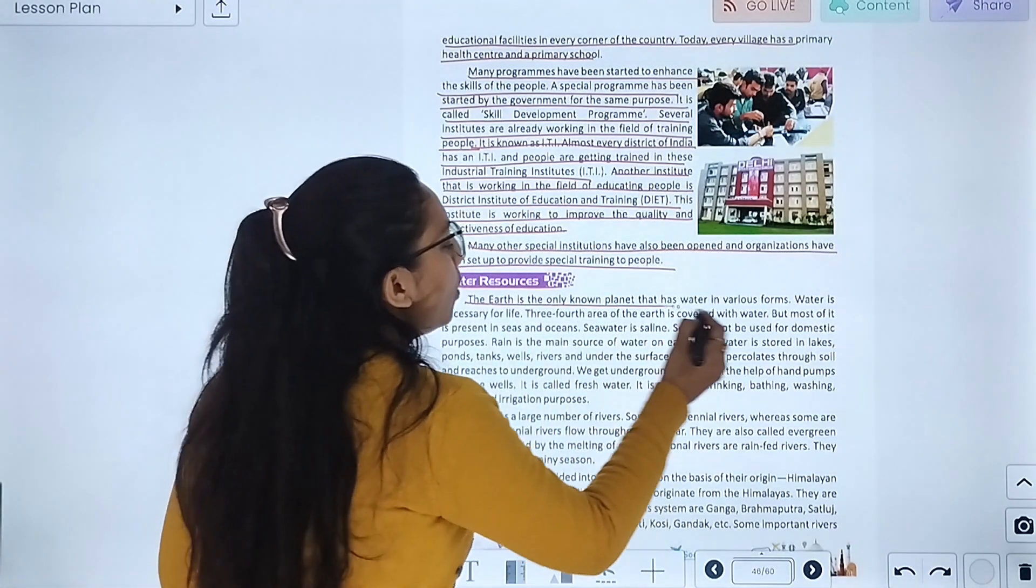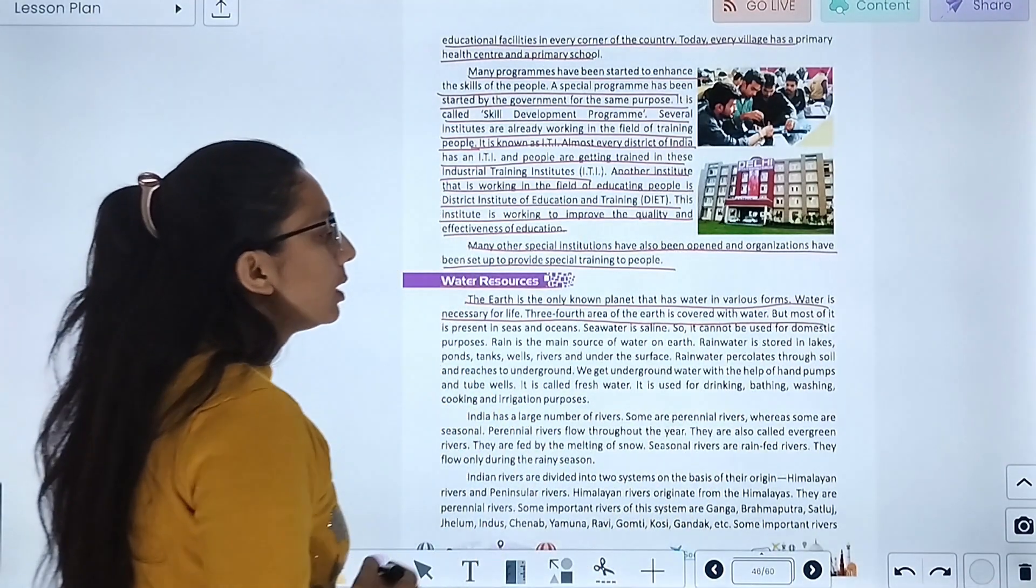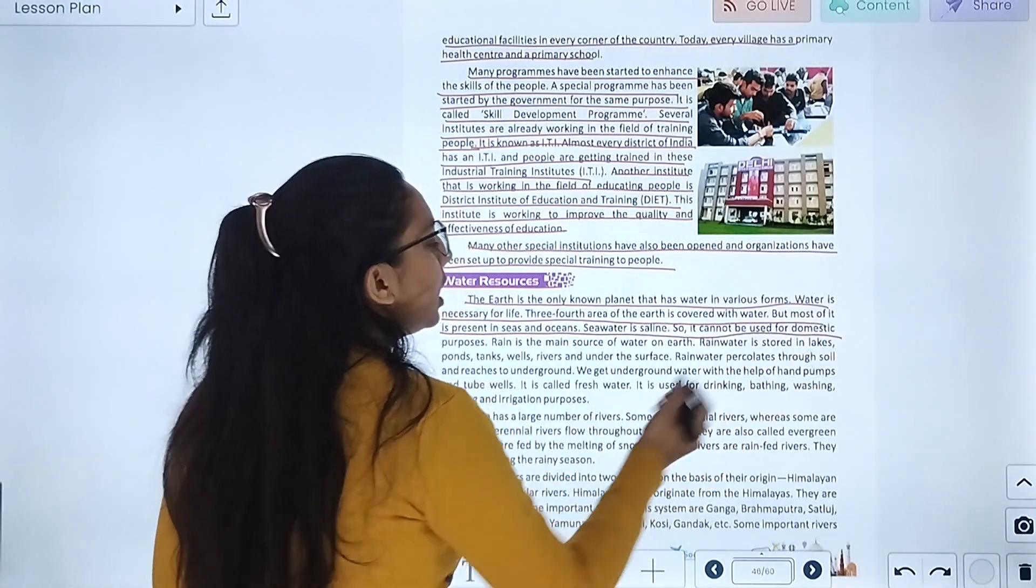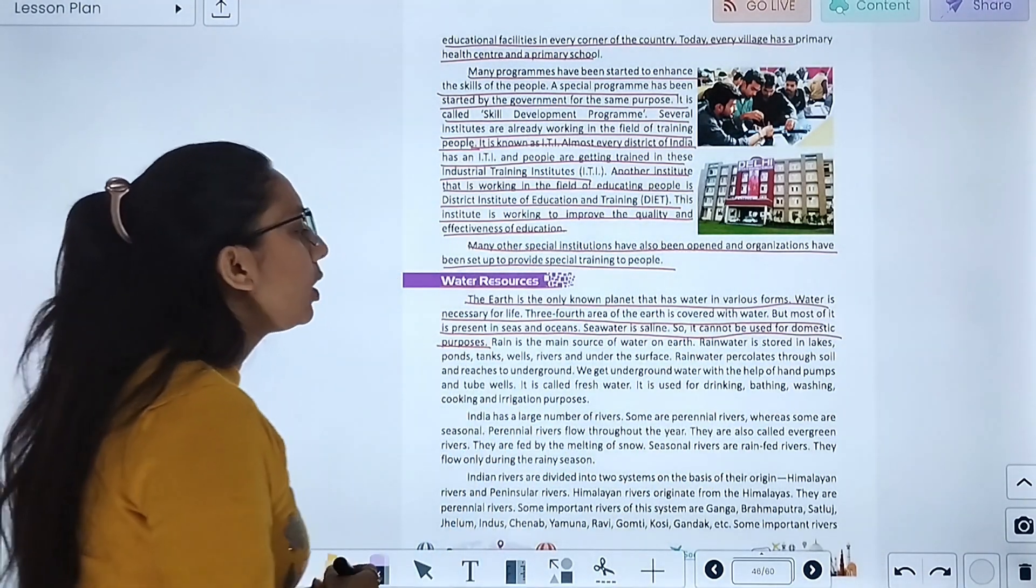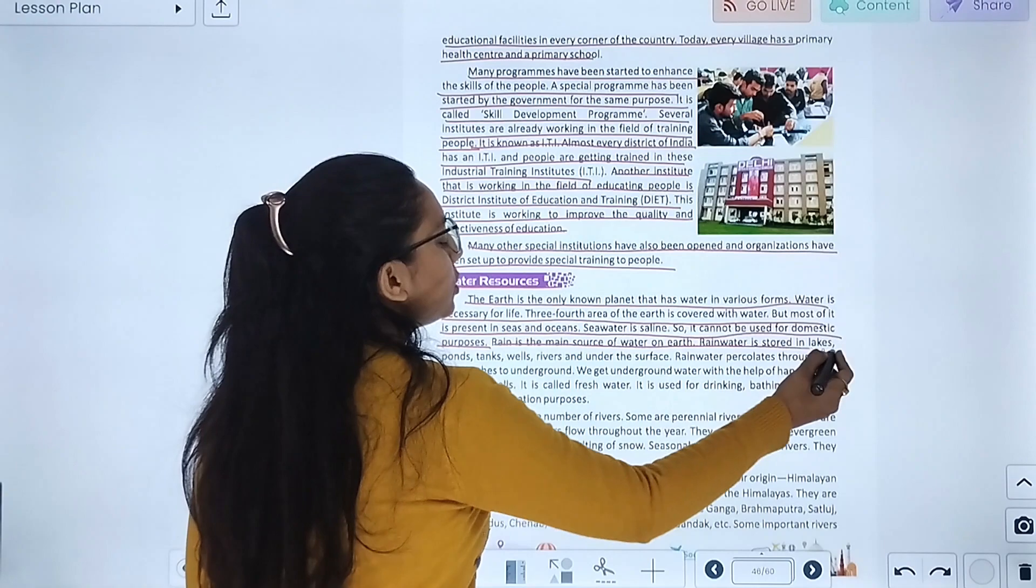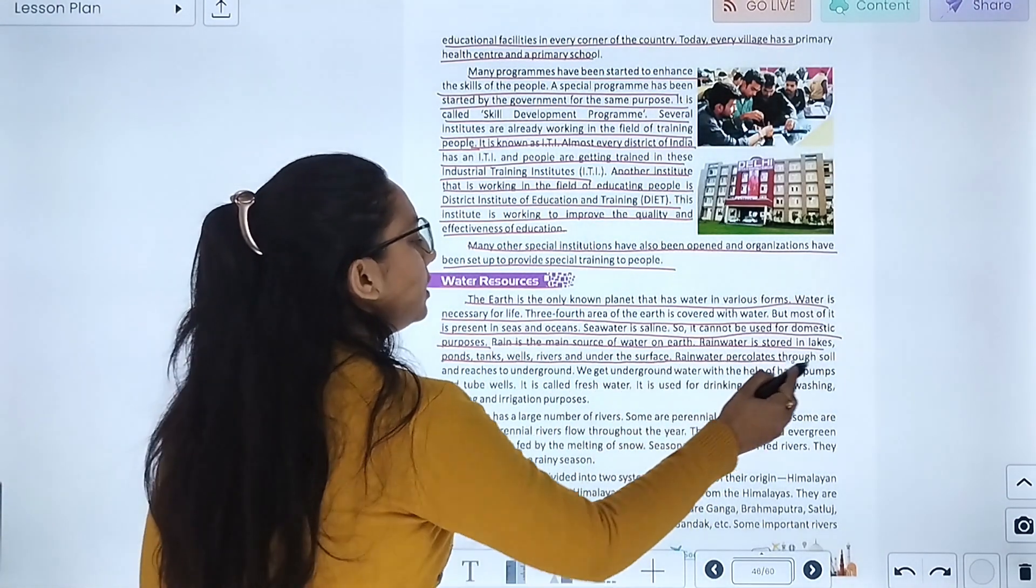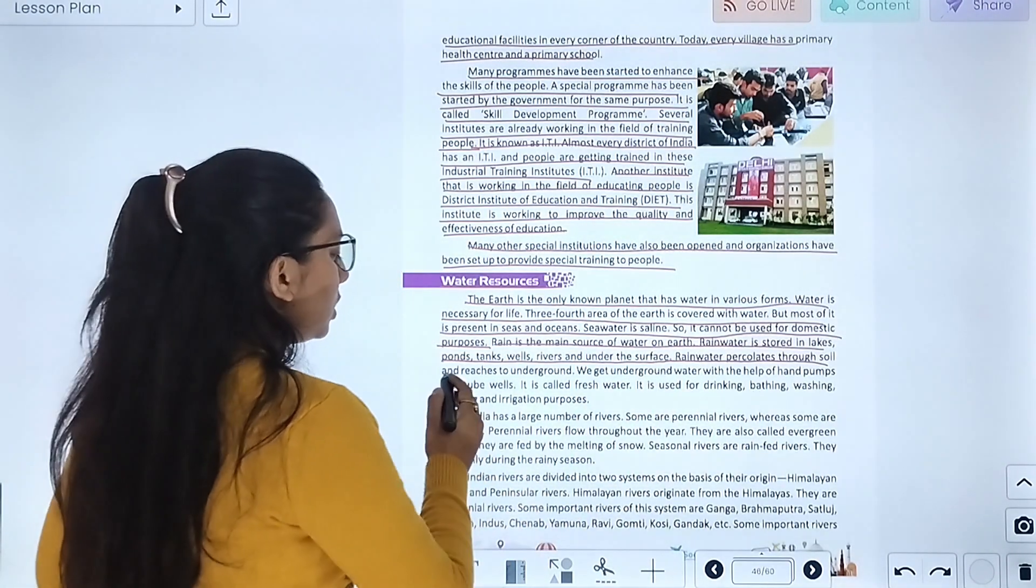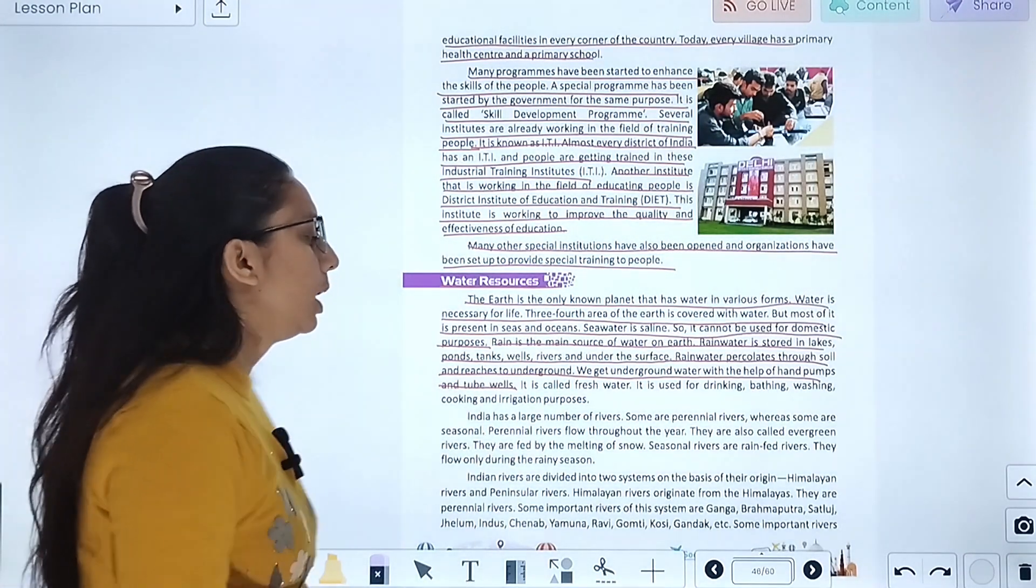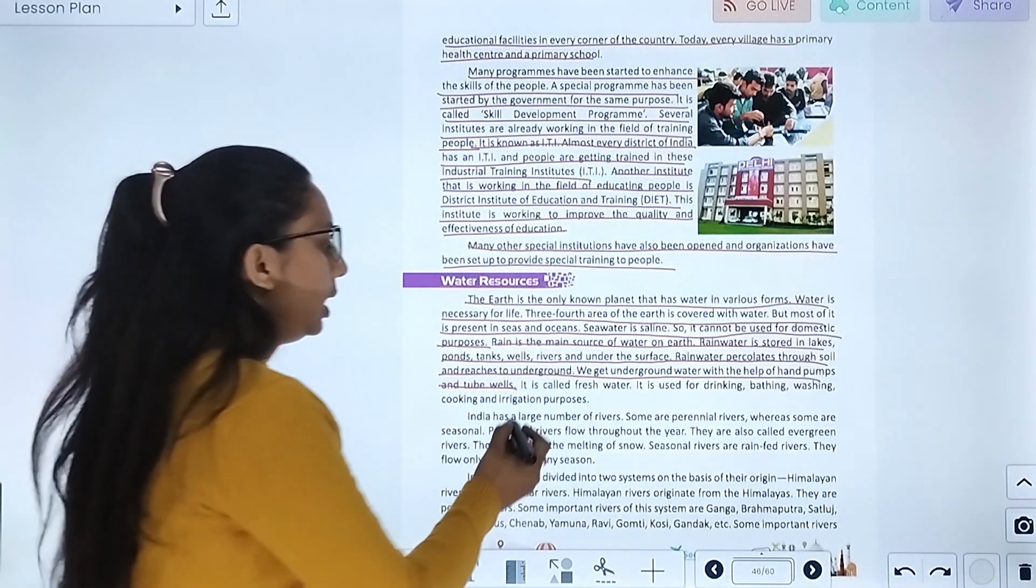Water resources. Earth is the only planet that has water in various forms. Water is necessary for life. Three-fourths of the area of the earth is covered with water, but most of it is present in seas and oceans. Sea water is saline, so it cannot be used for domestic purposes. Rain is the main source of water on the earth. Rainwater is stored in lakes, ponds, rivers and under the surface. Rainwater percolates through the soil and reaches underground. We get underground water with the help of hand pumps and tube wells.